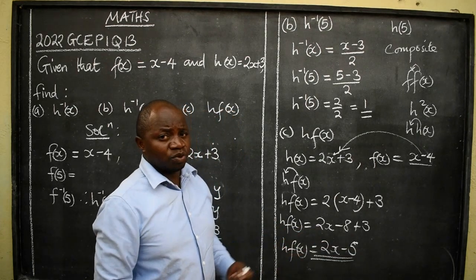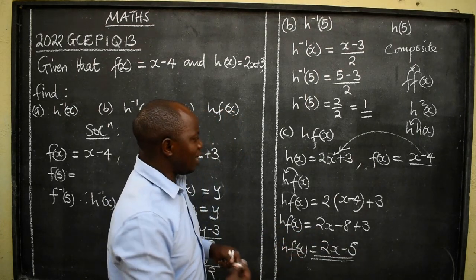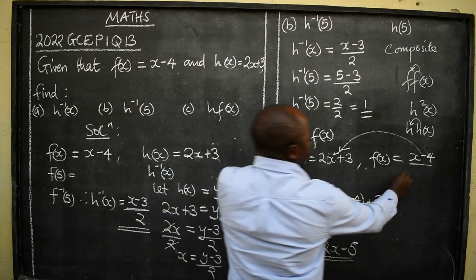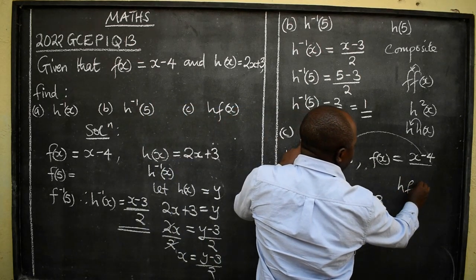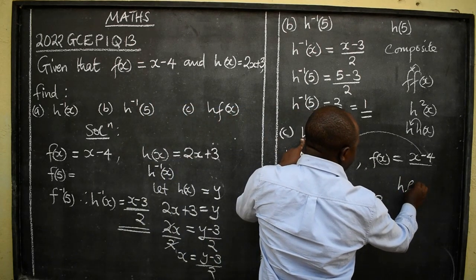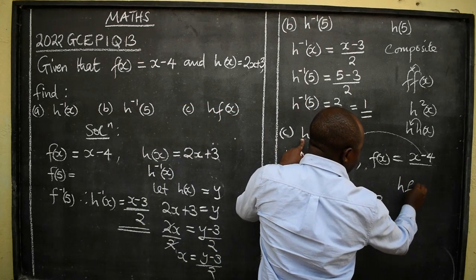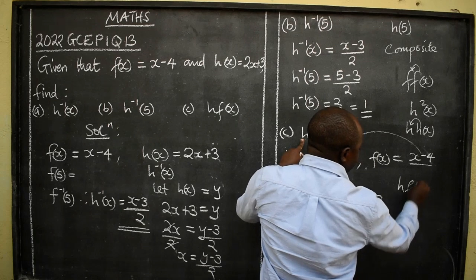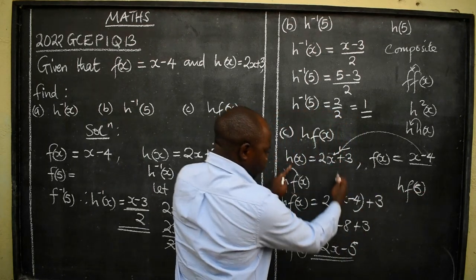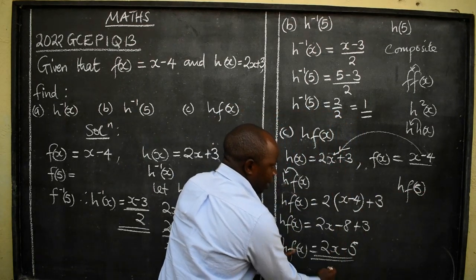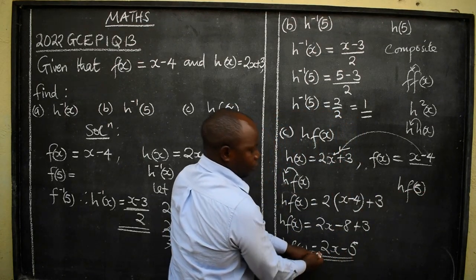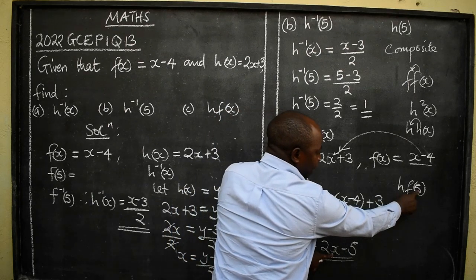There are times as well when they can ask you to find the composite in the other direction. After reaching this point, you would apply the same technique in reverse. h(f(x)) = 2x − 5 is the answer we found here.